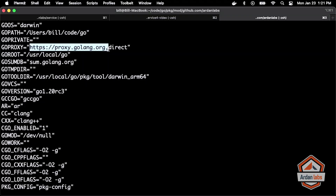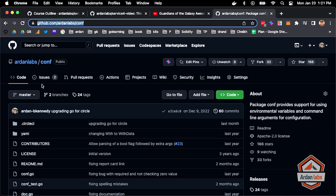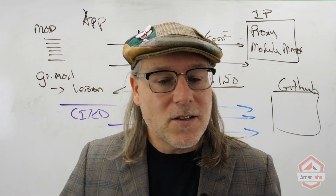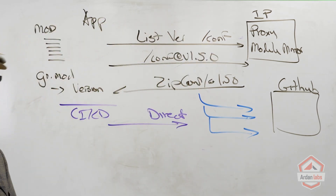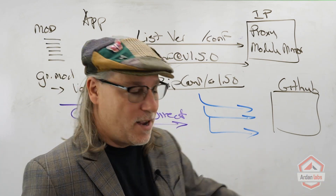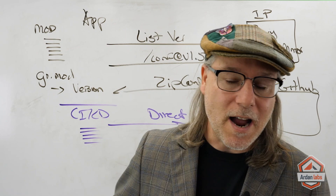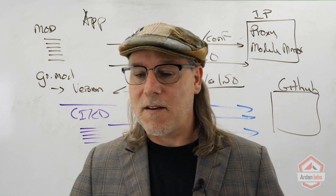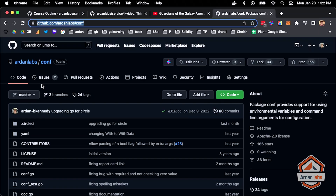We have no idea even if the code is different, because what is stopping me — since I own this repo — from going in, deleting the 1.5.0 tag, updating the code, pushing it up, and reapplying the 1.5.0 tag? Nothing is stopping me. That tag isn't necessarily a guarantee the code is always the same. I could slip in nasty bugs, break the API, or add a security risk — and now you're downloading and building against that code. As Tyler is saying, we need a way of knowing we're always using the exact code we saw the very first time. This is where the go.sum file comes in.